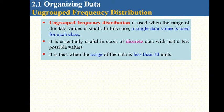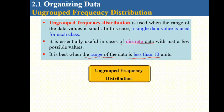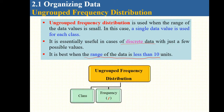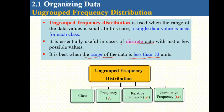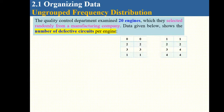Ungrouped frequency distribution is used essentially for discrete data, and it is best when the range of data is less than 10 units. In ungrouped frequency distribution, we have class, frequency, relative frequency, and cumulative frequency.